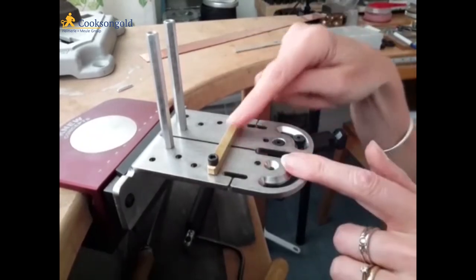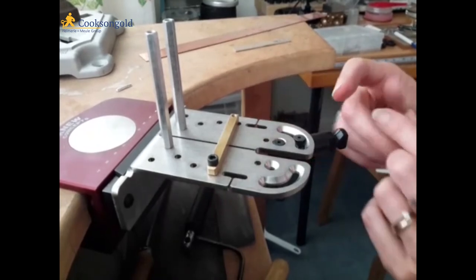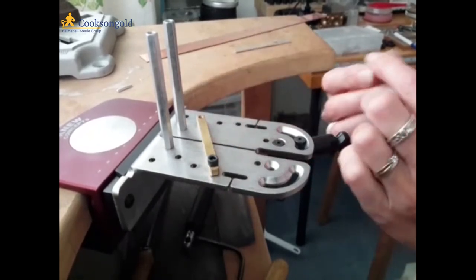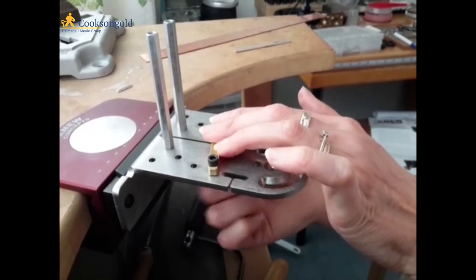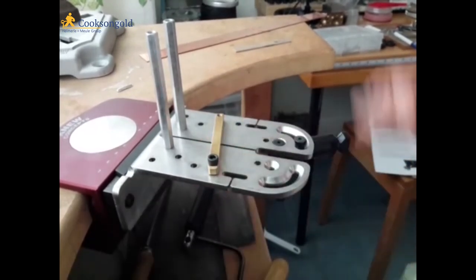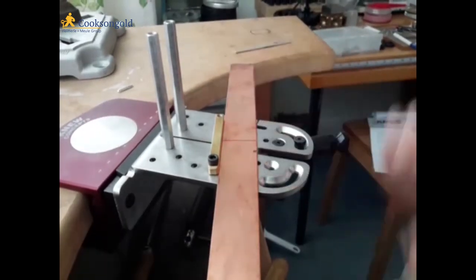This bar also moves to other angles up to 45 degrees, just by moving the thumb screw like that. So again, if you're filing at different angles, that's really useful.